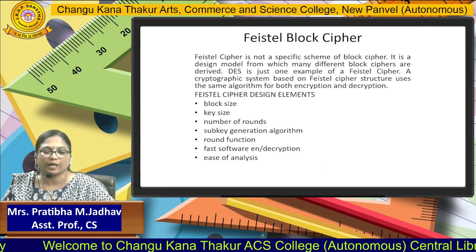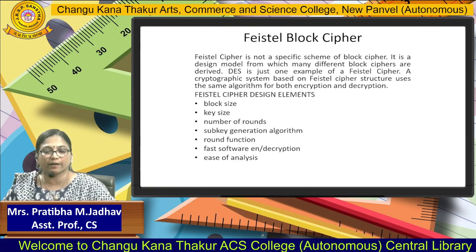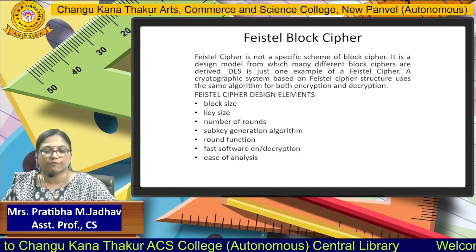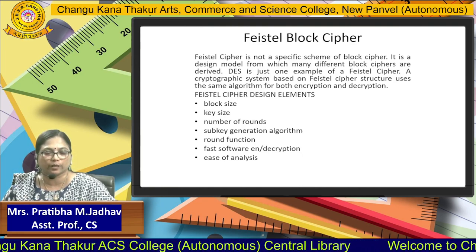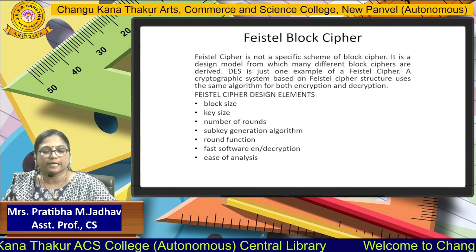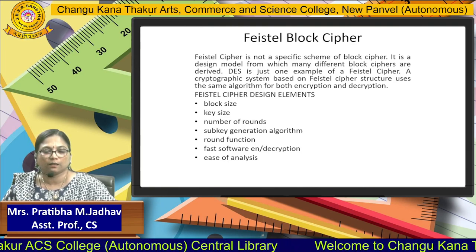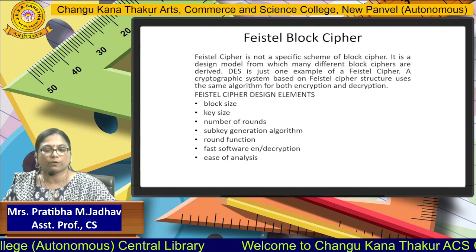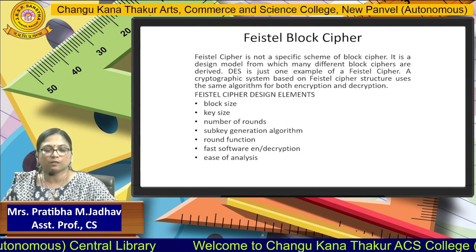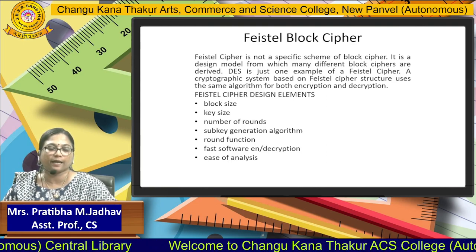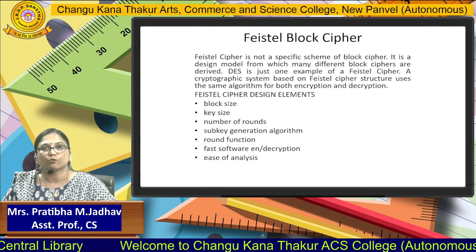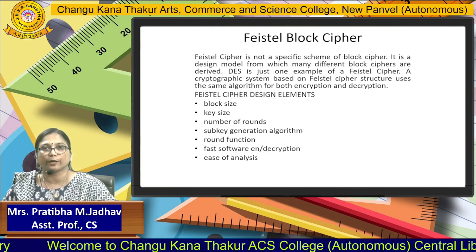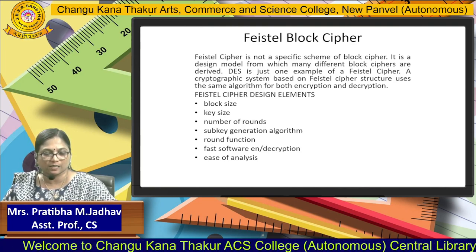The Feistel block cipher has several conventions and rules which have to be followed in the algorithm: that is block size, key size, number of rounds, sub-key generation algorithm, round function, and encryption and decryption software — that is the algorithm which is going to be used for the cipher technique.